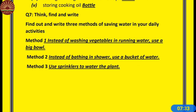Question number 7: Think, find, and write three methods of saving water in your daily activities. You find out and write three methods of saving water in your daily activities.